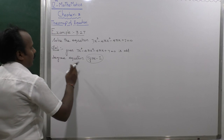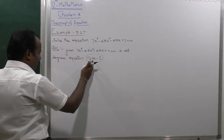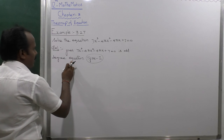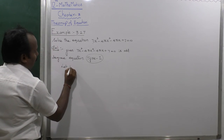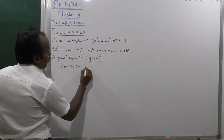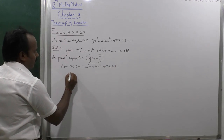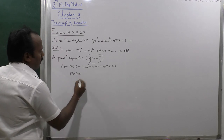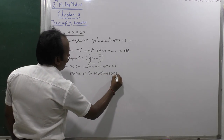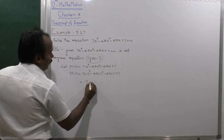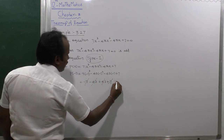Since this is an odd-degree equation, one solution is x = -1. To verify, let P(x) = 7x³ - 43x² - 43x + 7. Then P(-1) = 7(-1)³ - 43(-1)² - 43(-1) + 7 = -7 - 43 + 43 + 7 = 0. So P(-1) = 0.